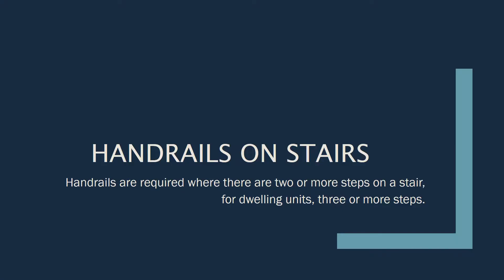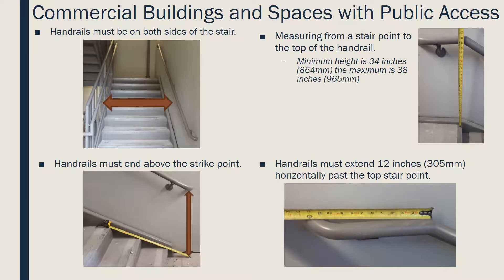This section will be about handrails on stairs. Handrails are required where there are two or more steps on a stair, or for dwelling units where there are three or more steps. For commercial buildings and spaces with public access, handrails must be on both sides of the stair. Measuring from a stair point to the top of a handrail, the minimum height is 34 inches and the maximum is 38 inches. The handrail must end above the strike point, and the tape measure can be used to show the location of the strike point to verify the handrail is long enough. The handrail must also extend 12 inches horizontally past the top stair point.